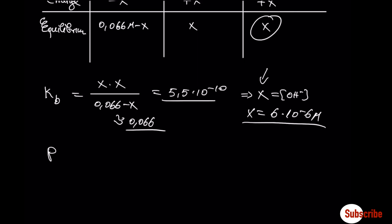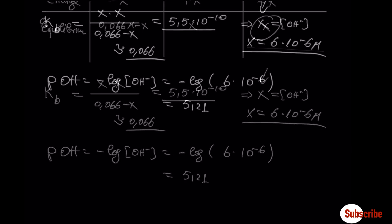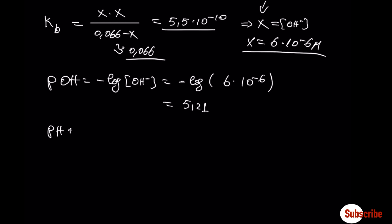From here, we can find pOH. We know that pH plus pOH are equal to 14. pH equals 14 minus pOH.